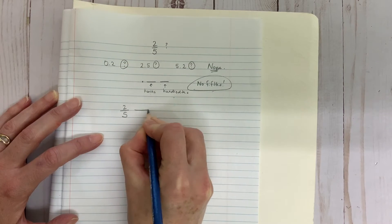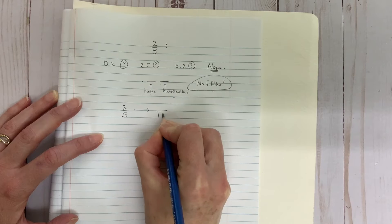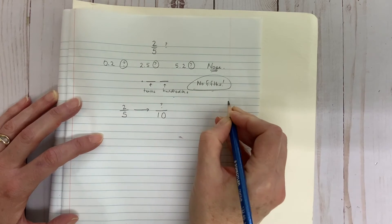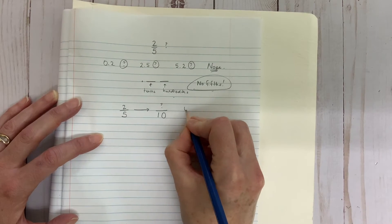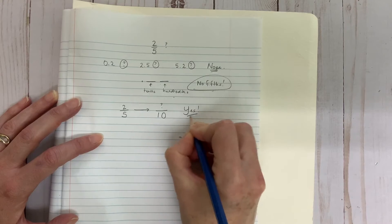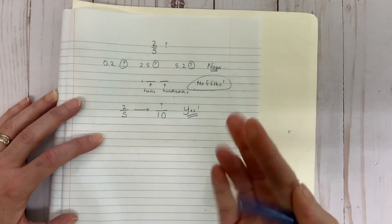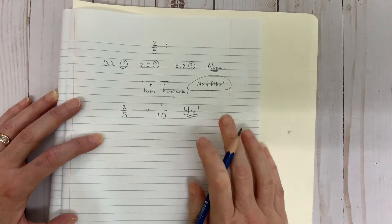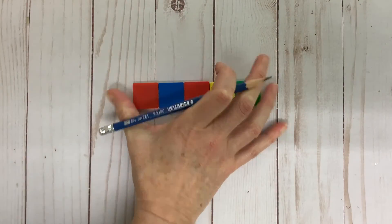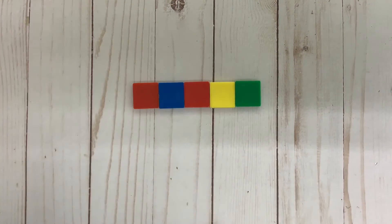Can we change fifths into tenths? Now there's an idea. We just need to make an equivalent fraction, right? If we want to change these fifths into tenths, I just need to figure out a way to split this rectangle into ten pieces instead of five.